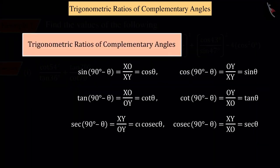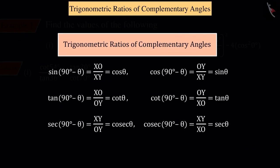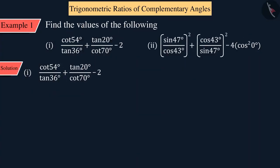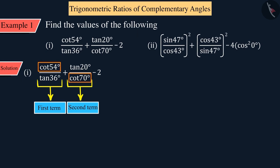To solve this, we will use the trigonometric ratios of complementary angles. Therefore, here in the first and second terms, we will either change the cot to tan or tan to cot. Because we know that cotθ equals tan(90° - θ) and tanθ equals cot(90° - θ).